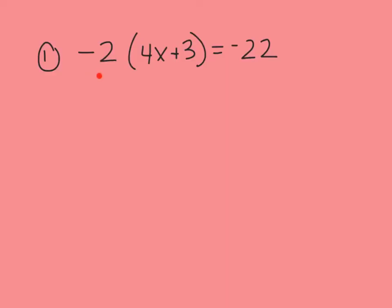Our first problem says negative 2 times the quantity 4x plus 3 gives us an answer of negative 22. Let's start by drawing our line down the center to split up the left and right side of the equation. Everything inside these parentheses has to be multiplied by this negative 2 because we're using the distributive property.